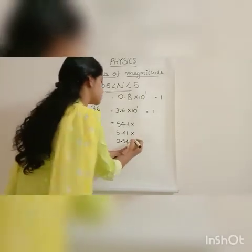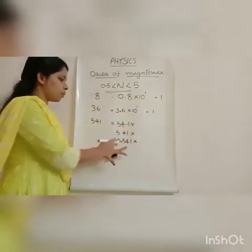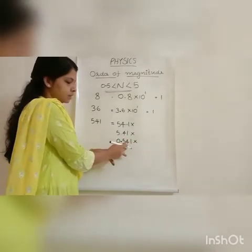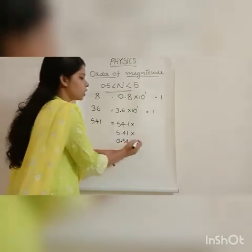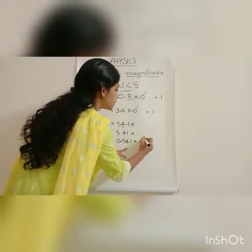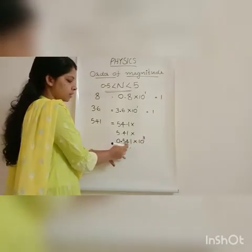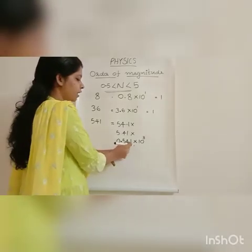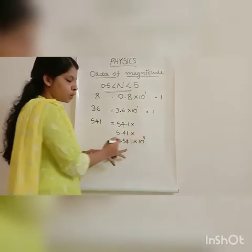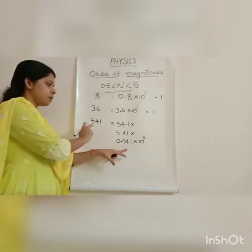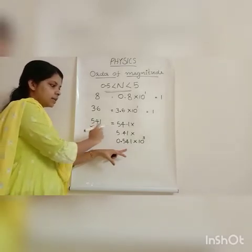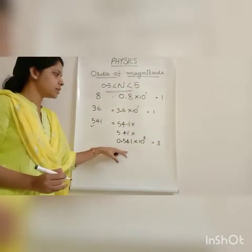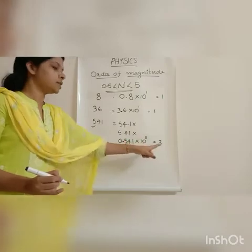So we express 541 as 0.541 into 10 raised to 3, because we are placing the decimal point after three digits. Therefore the order of magnitude of the number 541 is 3.